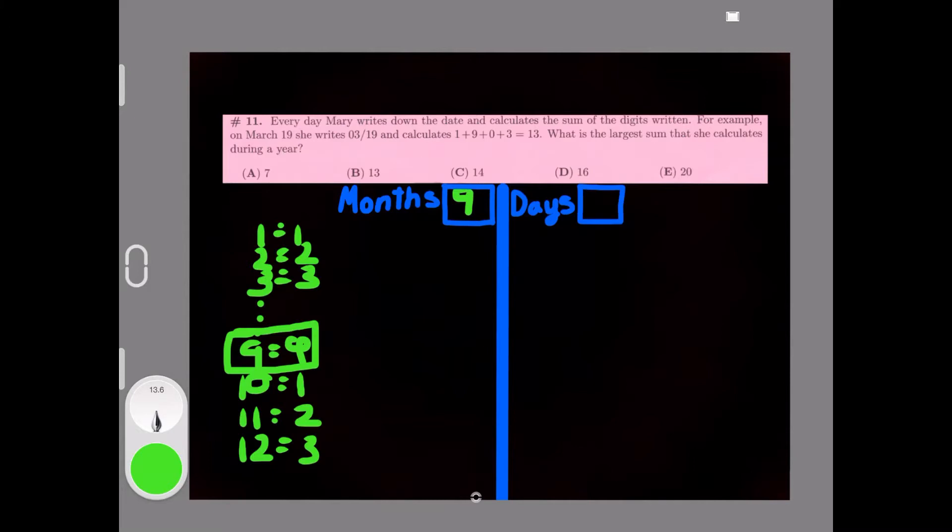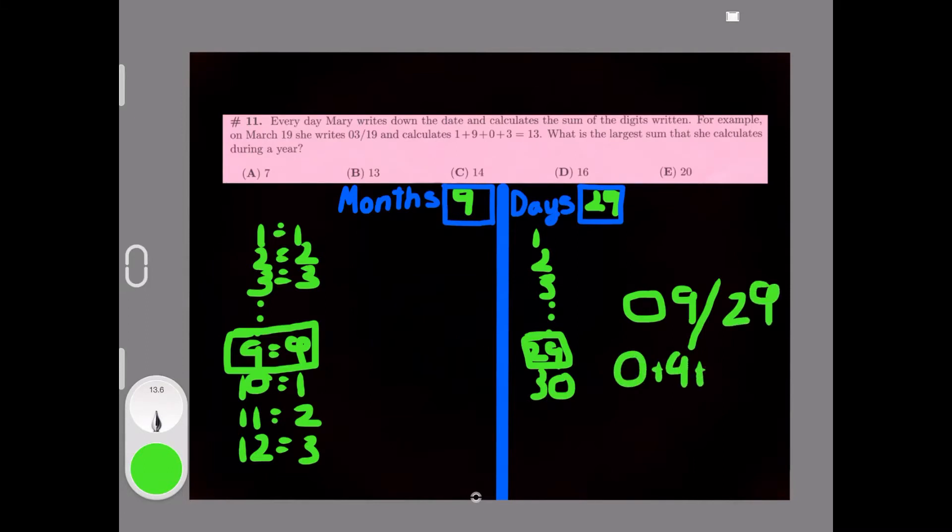Because the ninth month is September and September has 30 days, if we write down all the dates all the way to 29, 30, 29 will become our greatest date because it'll add up to 11. So our final date would be 09/29, and if we add 0+9+2+9, we would get 20.